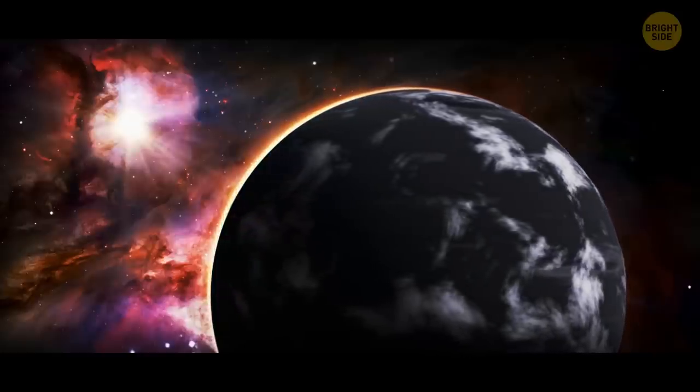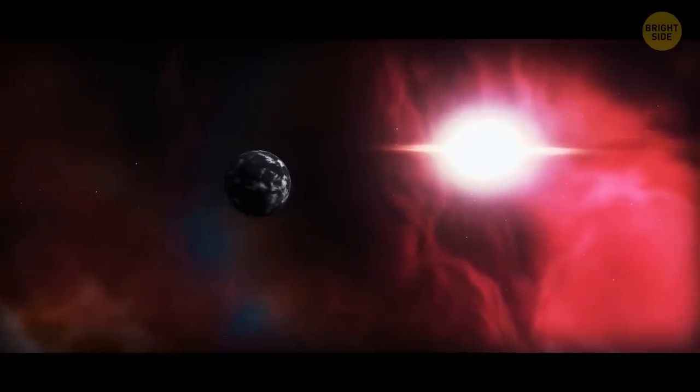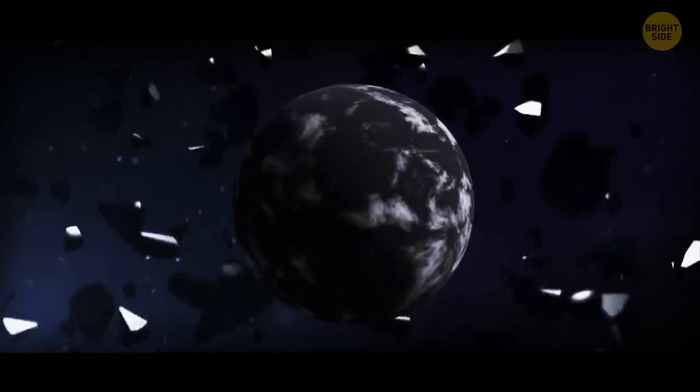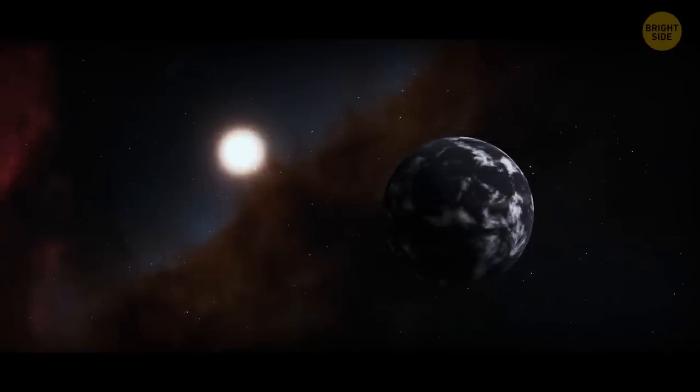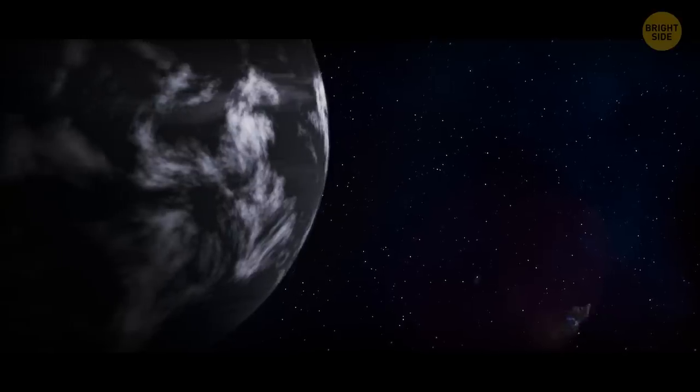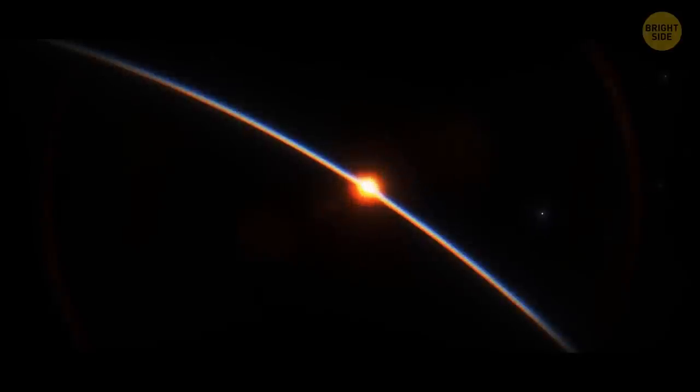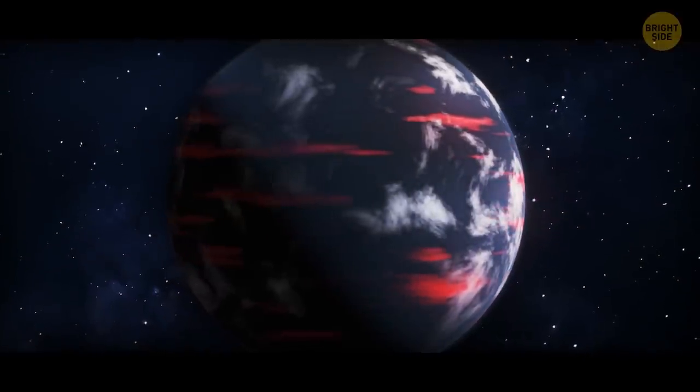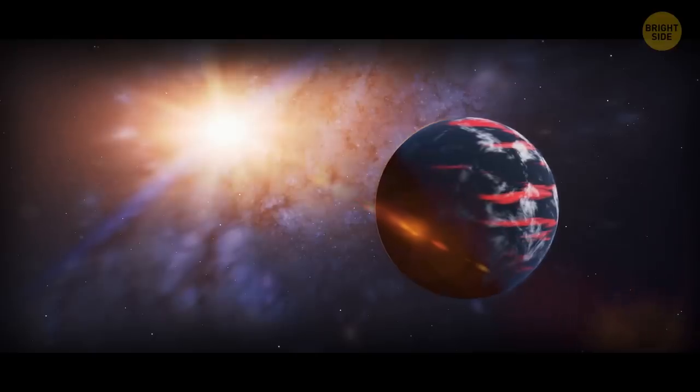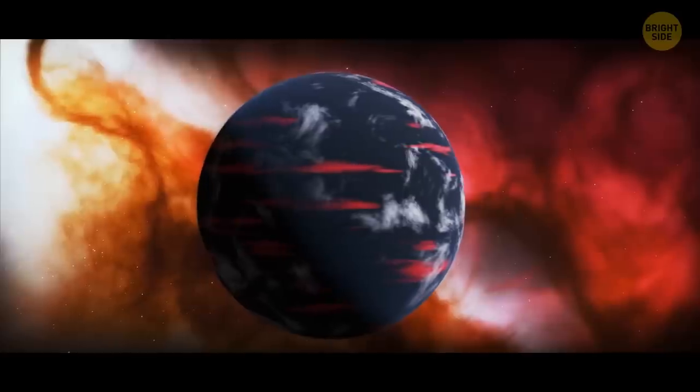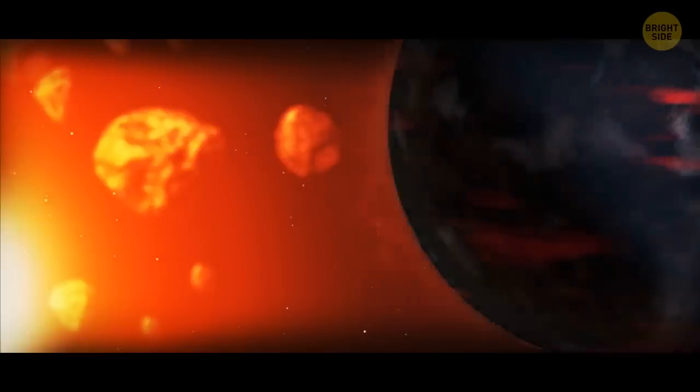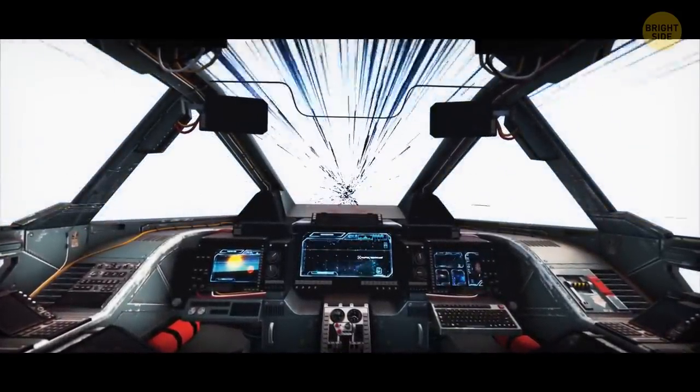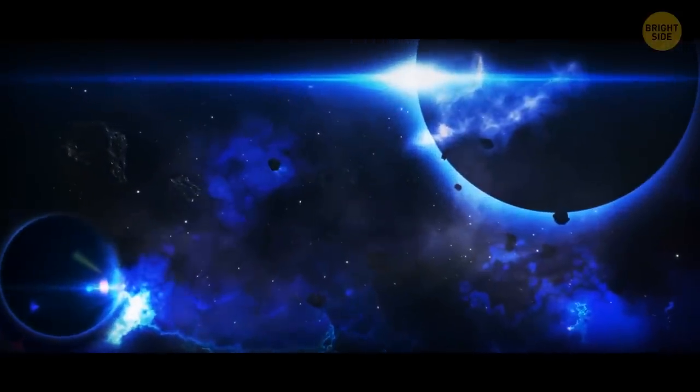But it's not that far from its star, so why is that? The thing is, the surface of Tras-2b reflects light even worse than coal does. Because of this, it seems that there's no light at all. If you were flying across the surface of this planet, it would be like walking with a blindfold on your eyes. Oh, wait. Actually, there is some light. An eerie, deep red glow surrounds the surface of the planet. This glow is created by the burning atmosphere, which makes Tras-2b a scorching planet. The air there is even hotter than lava. Oh, but if you think that was bad, let me show you the next place of our horror journey.